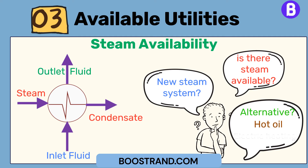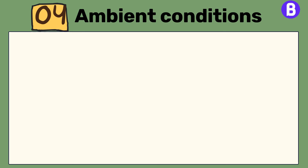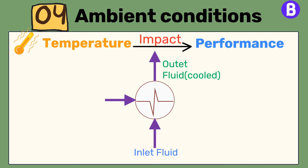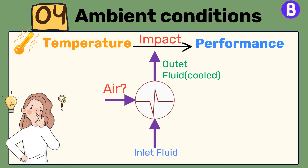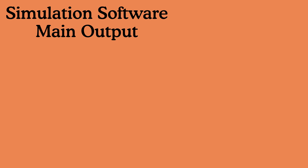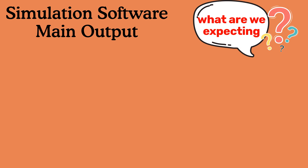Ambient conditions, mainly temperature, can also impact the performance of the plant and its equipment. Another famous example here can be the use of an air-cooled exchanger. If we need to cool a fluid, shall we cool it by air or by water or by both? If there is enough temperature difference between the air temperature and the target temperature we want to reach, then we may think about an air cooler.